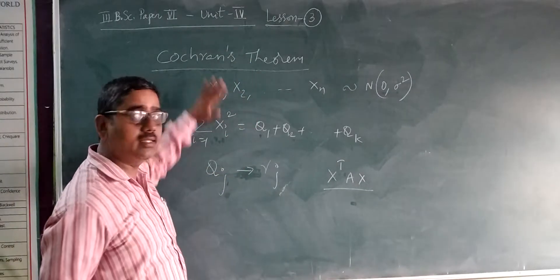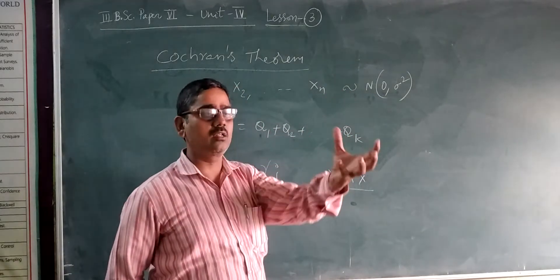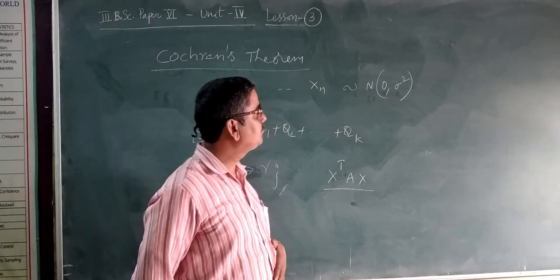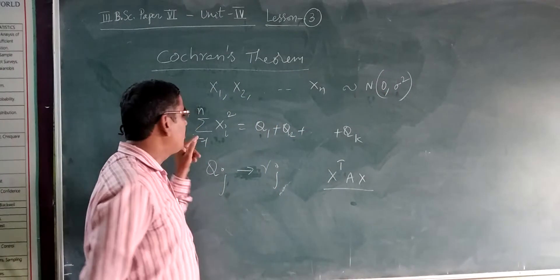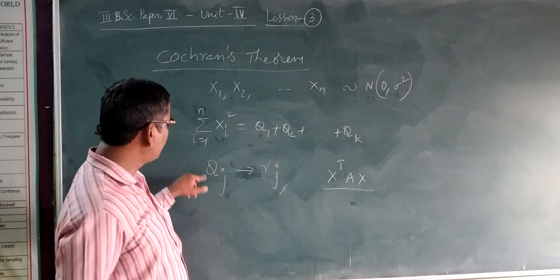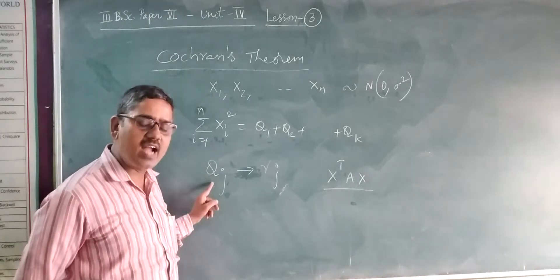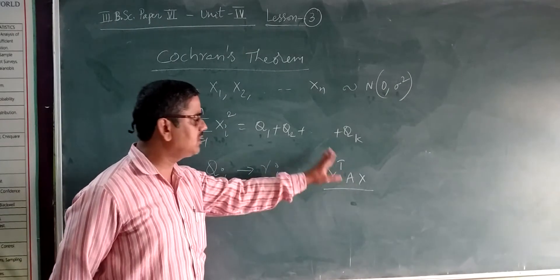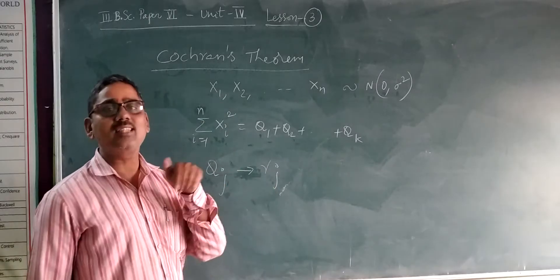Now, if you understand these three points: first, X1, X2, ..., XN follow a normal distribution drawn from a normal population with mean 0 and variance sigma squared. Second, we express summation i equals 1 to N of Xi squared as Q1 plus Q2 plus QK, where each QJ is a quadratic form with rank RJ. This is the setup for Cochran's theorem.